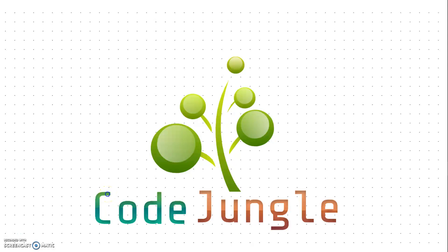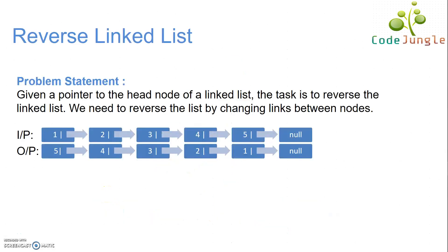Welcome to Code Jungle. In this video, we will discuss how to reverse a linked list. For example, given here is the input linked list, and when we reverse it, the output should be something like this, where the last node is at first now and vice versa. We will need to reverse the link between the nodes to achieve the given output.